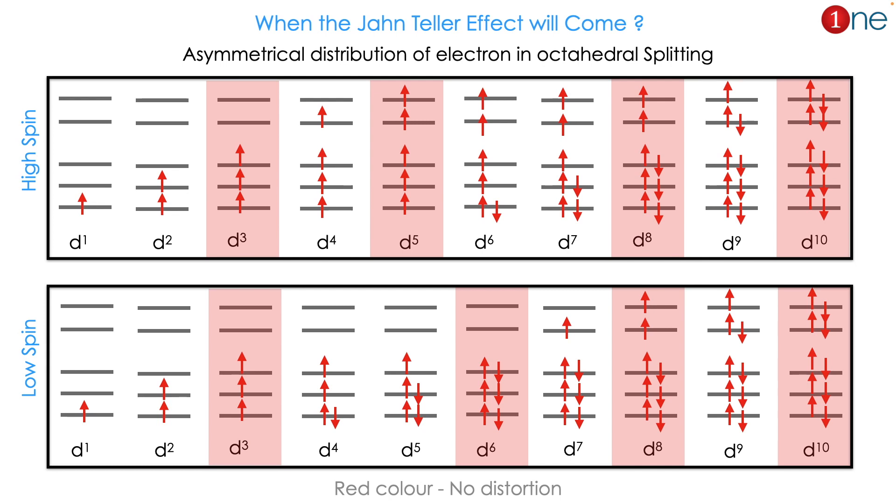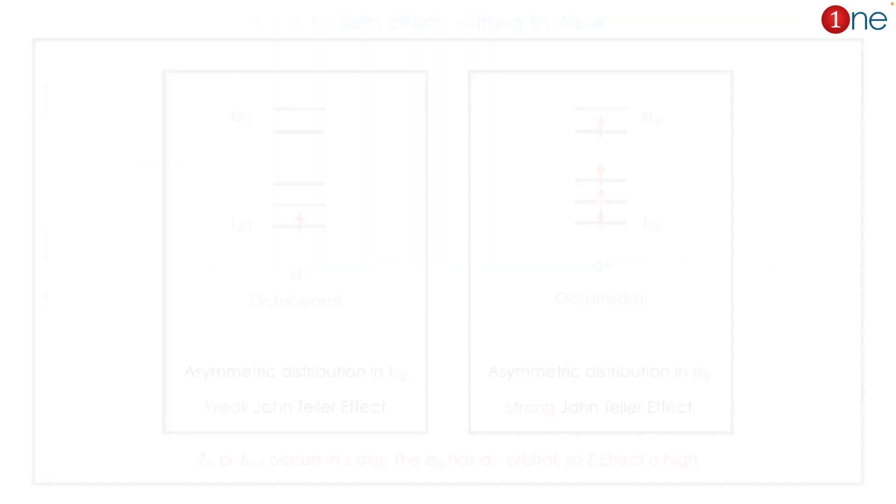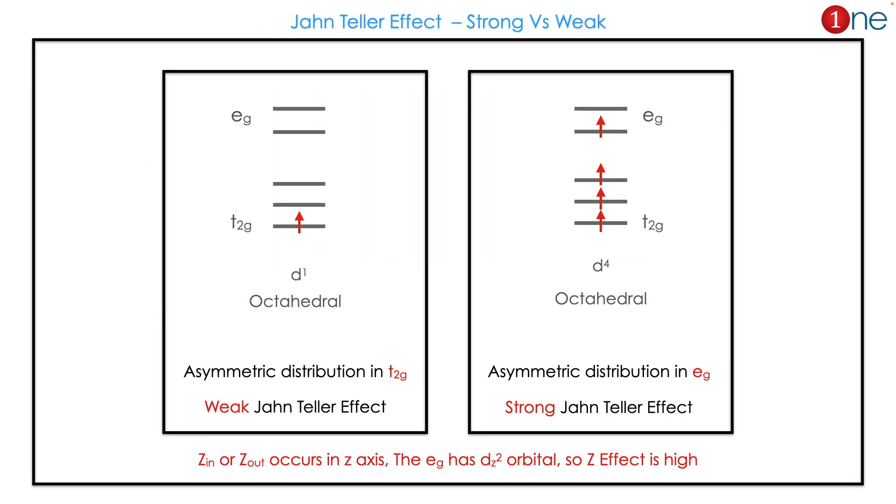When electrons are asymmetrically filled in the eg orbital, the effect will be maximum or strong. The reason is that Z in and Z out happen in the axis which is in the dz² space, so maximum distortion occurs in the eg distribution.